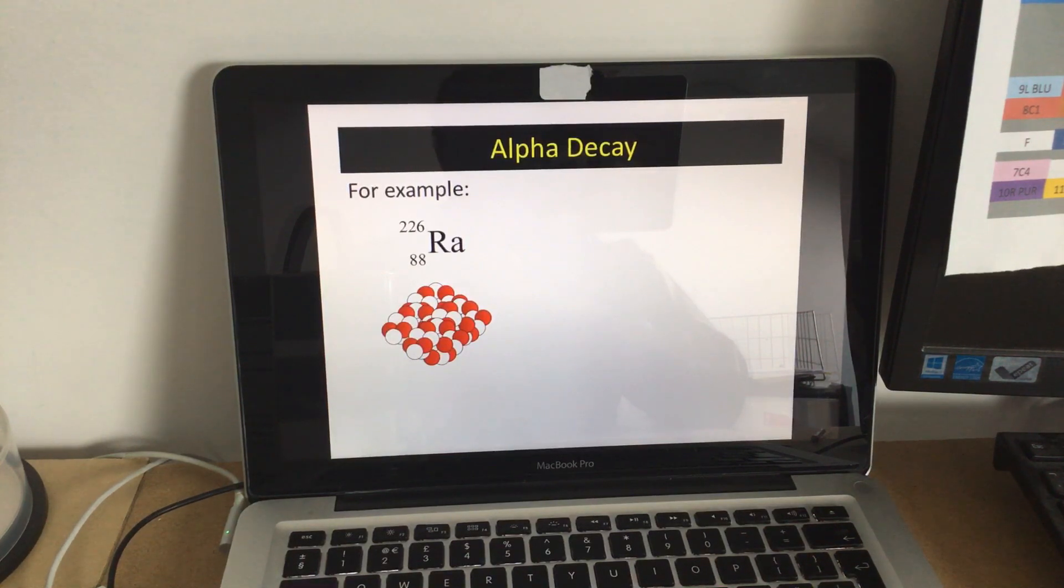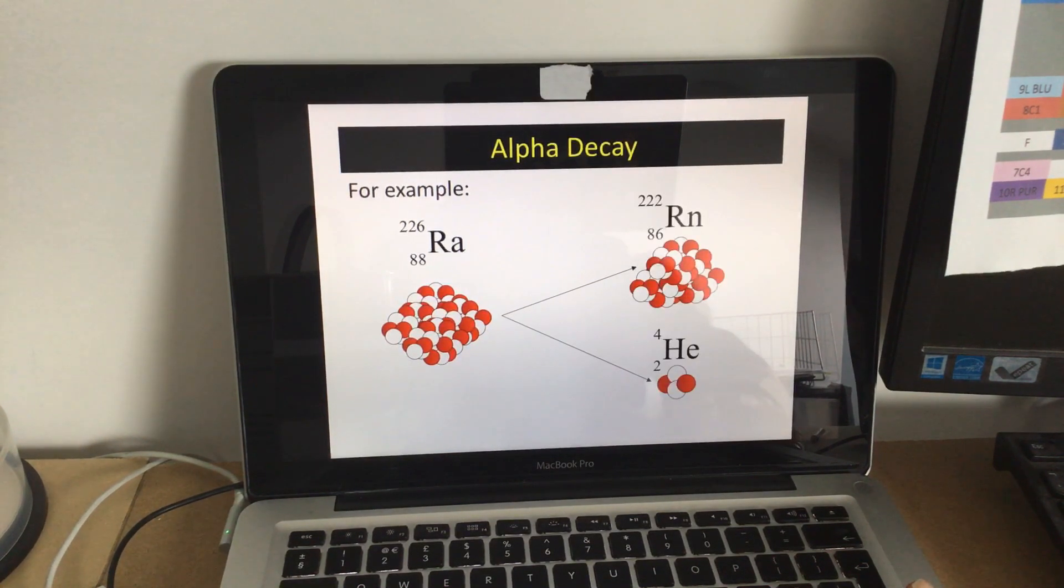What happens is a chunk breaks off, as I've said in my last video, of an alpha particle, and the alpha particle always is made up of two protons and two neutrons. Now here it's written as helium, because helium actually has two protons and two neutrons, just like an alpha particle, but instead of being written like that it could be 4, 2, alpha.